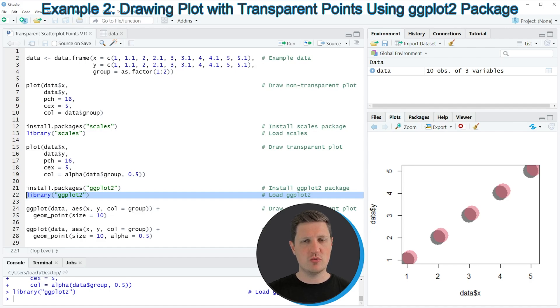And after running this line of code, we can use the functions of the ggplot2 package, such as ggplot and geom_point. So in lines 24 and 25 of the code, I'm creating a ggplot2 scatter plot without transparent points.